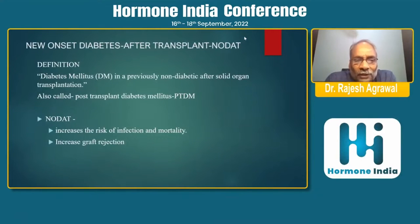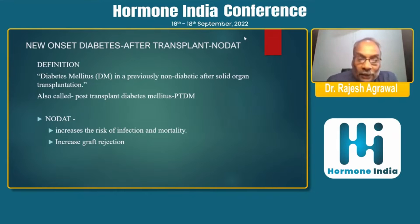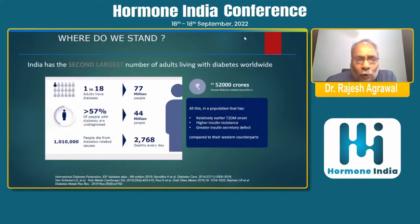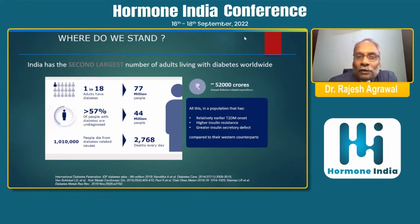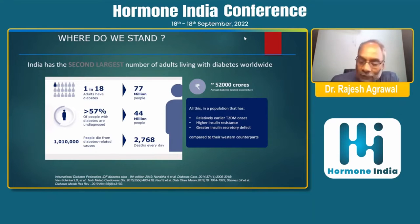Why is it important to discuss NODAT? Because it increases the risk of infection and mortality as compared to classical type 2 diabetes, and also increases the risk of graft rejection. We know that diabetes is increasing and places a large financial burden on the population, government, and family. The best approach is prevention — if we prevent diabetes, its complications and transplantation-related issues will also be reduced, and so post-transplant diabetes will also be reduced.